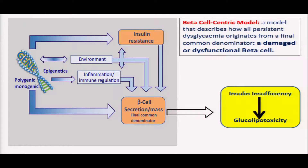Due to a variety of genes and epigenetics, combined with the environment, inflammation, immune regulation, and insulin resistance, all these are coming back to the common denominator which is the beta cell. The beta cell starts to fail, leading to insulin insufficiency, which in turn leads to glucolipotoxicity — basically a building up of glucose and toxic lipid particles inside the cell. To fight this entry of so much glucose and lipid inside the cell, the cell takes a barrier, trying to stop this entry.